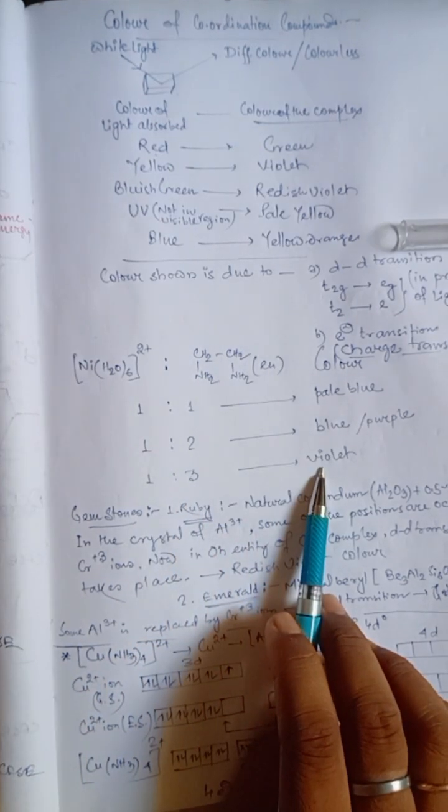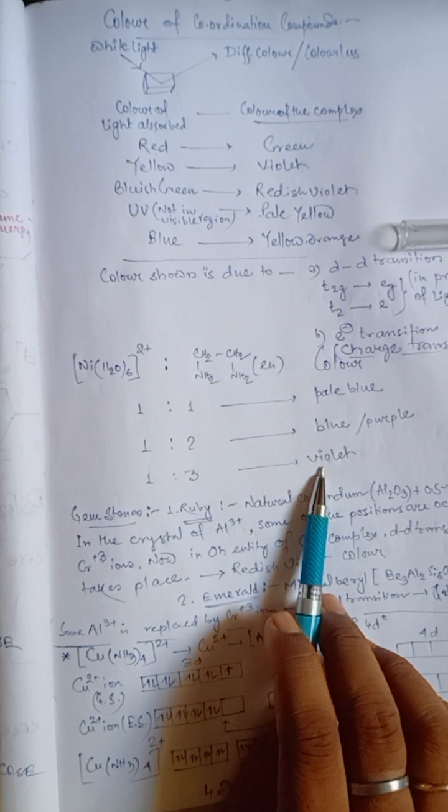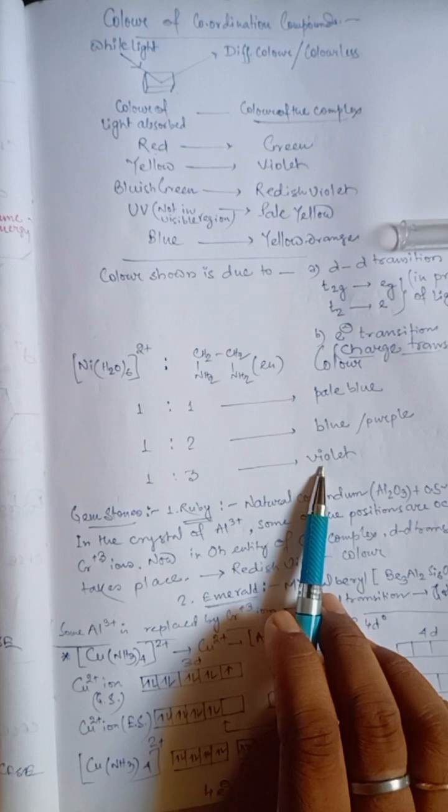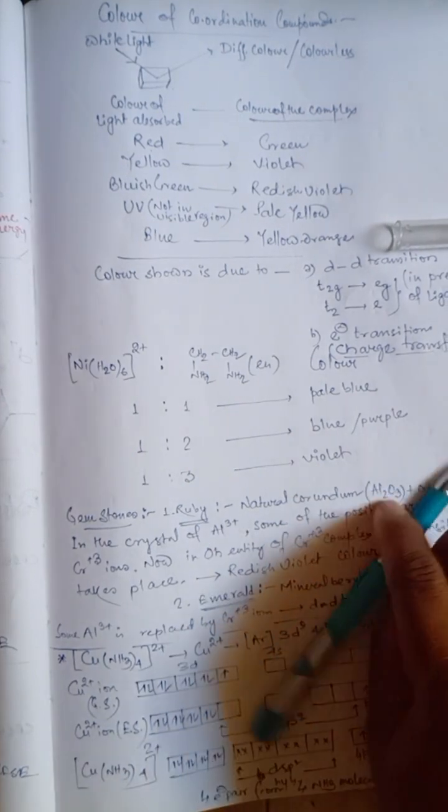This particular scenario is due to the addition of ethylene diamine in different ratio with nickel 2 plus ion. So, in presence of ligand, d-d transition occurs and we get different coloration.